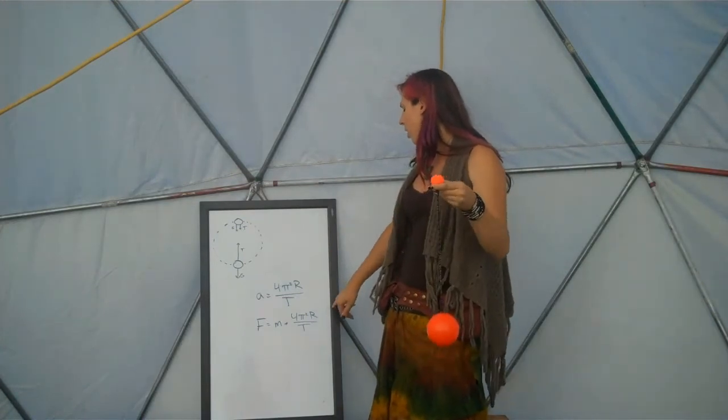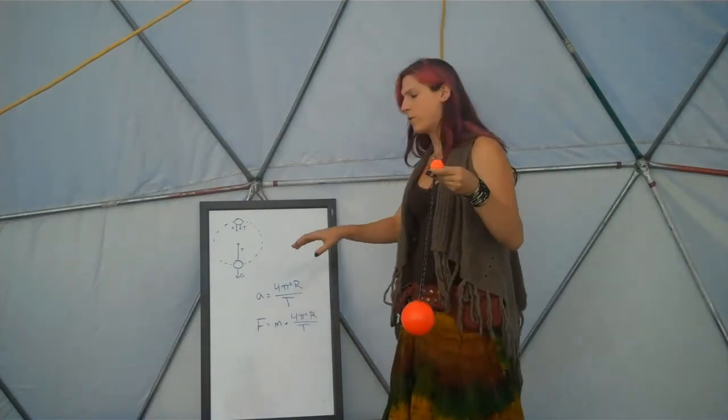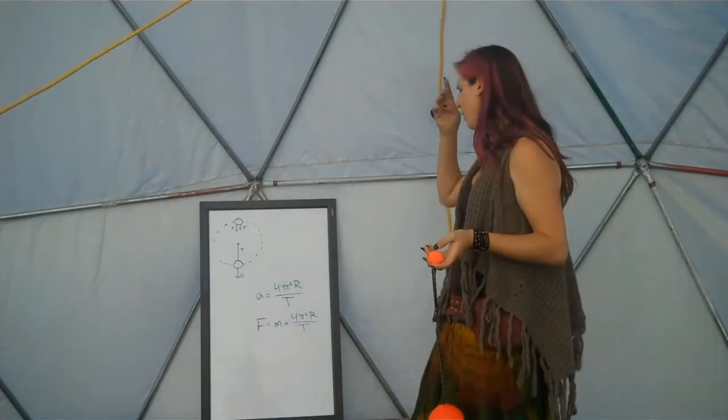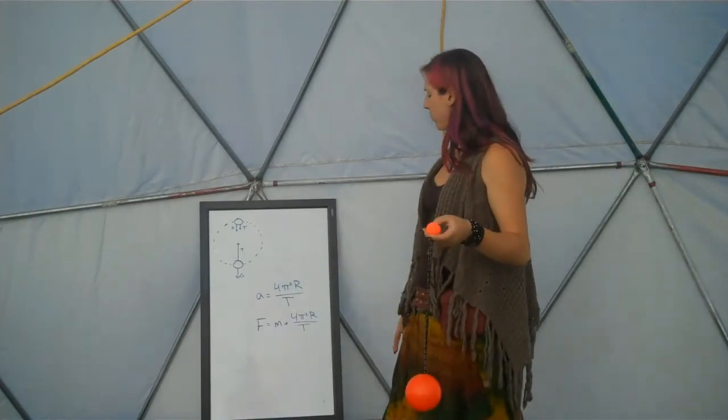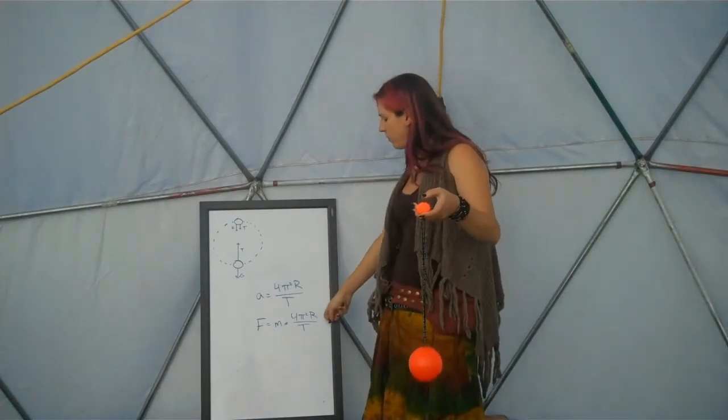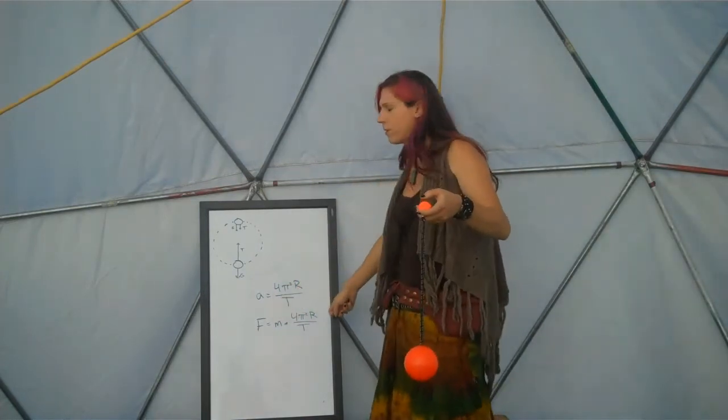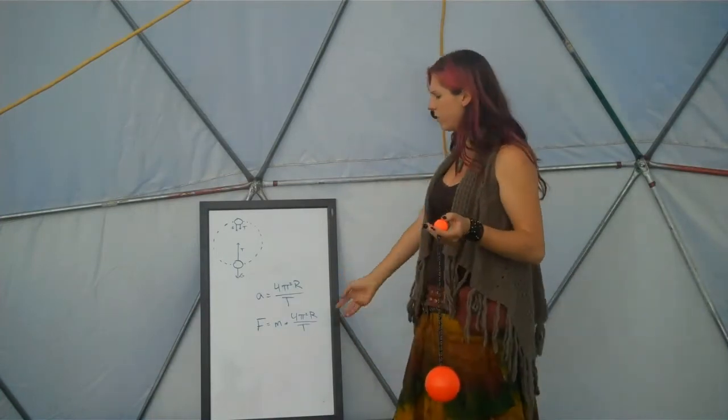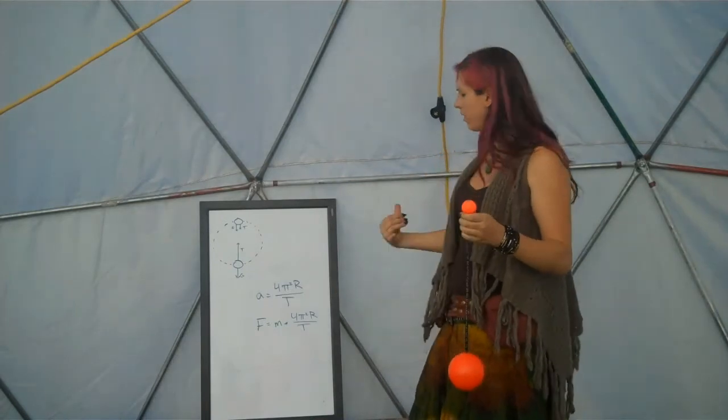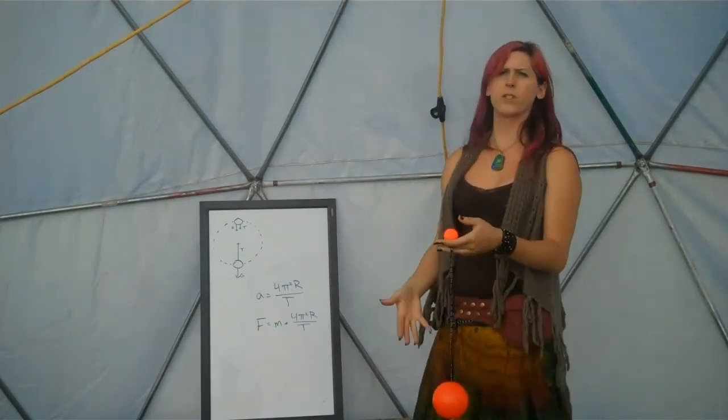We can see from this if our poi is lighter but we're swinging in the same circle, then we need less force to swing it around. But if we're swinging in a larger circle, then we need more force because the force is directly proportional to the radius. And it's inversely proportional to the period, so if we're spinning the poi in a faster circle, then the period increases, and so we need less force.